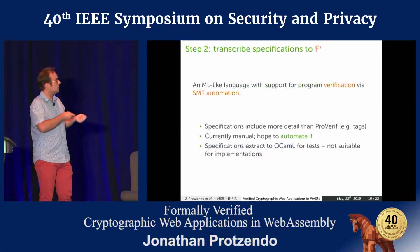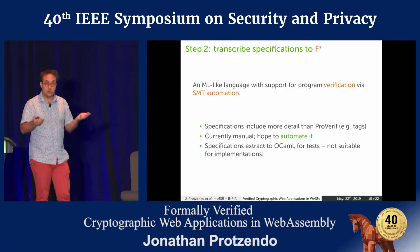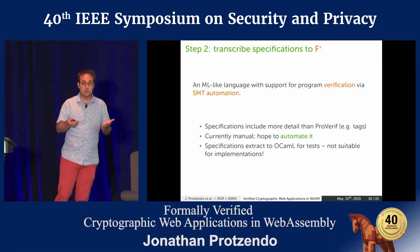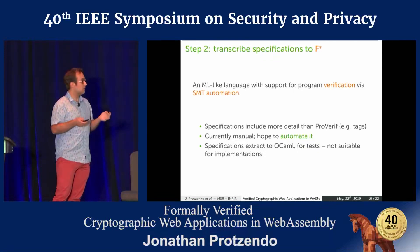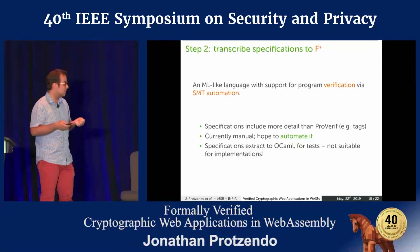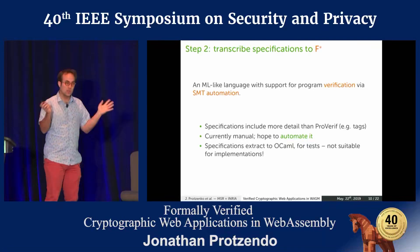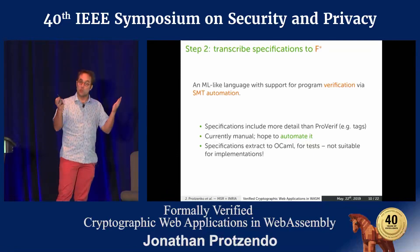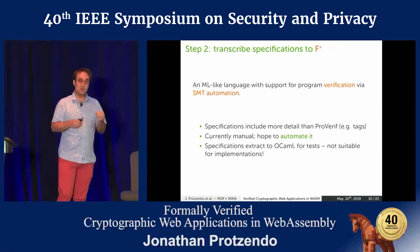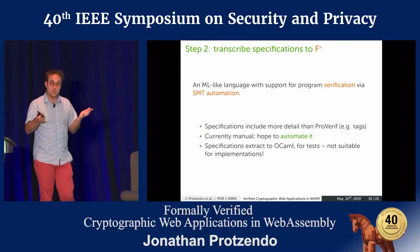We take our protocol description written in ProVerif and transcribe it into F-star. F-star is an ML-like programming language — think OCaml or F# — that allows you to perform program verification using SMT solvers such as Z3 to automate those proofs. The specifications we write in F-star are a little more detailed than the ones in ProVerif and might include some tags. The transcription from ProVerif to F-star is currently done by hand, and we manually audit the two side-by-side to make sure they're the same. These specifications are not suitable for implementation or compilation, but we can test them by extracting to OCaml for a sanity check.